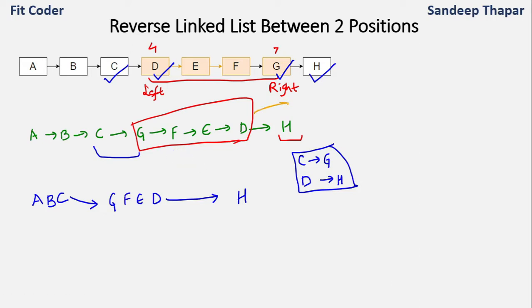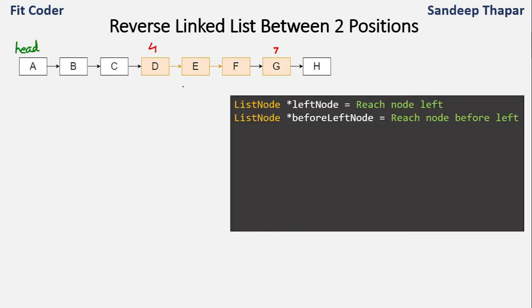We solved the reversal logic in the previous video and we'll reuse it to build the entire list. Now let's look at the algorithm. We are given the head and two integers — left is 4 and right is 7 — so we have to reverse the linked list from left to right.